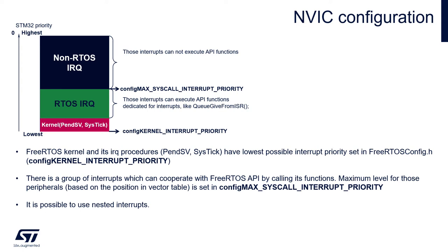NVIC configuration: to configure FreeRTOS within the application it is necessary to split all interrupts into three groups. Non-RTOS IRQs are the most important interrupts which cannot be interrupted or delayed by the operating system and cannot execute any OS code. RTOS interrupts are those which can be delayed or interrupted by the operating system and can execute OS code. Kernel interrupts consist of two interrupts — SysTick and PendSV — responsible for context switching. These should be the least important ones, allowing the rest of the hardware to work as if there is no operating system.